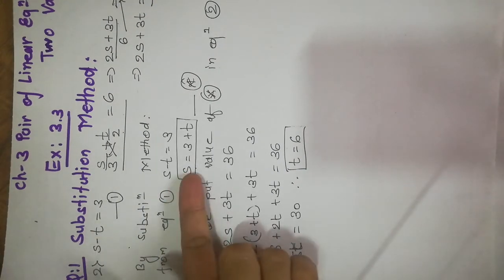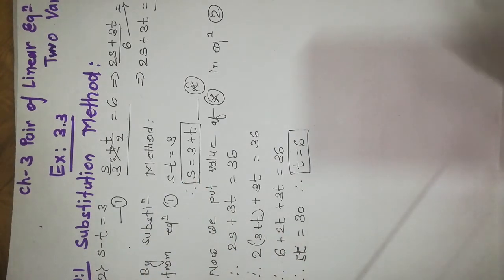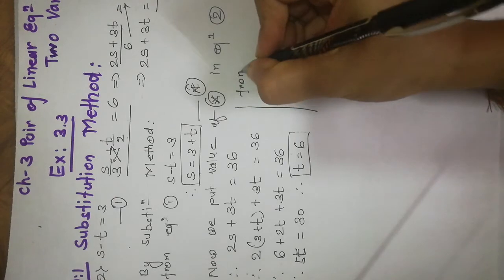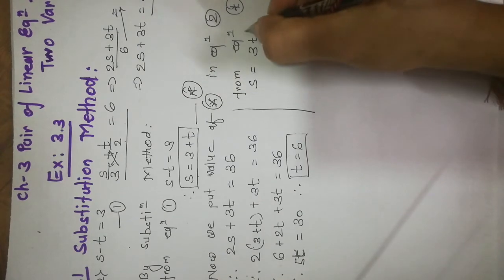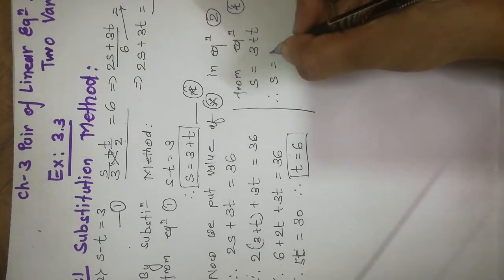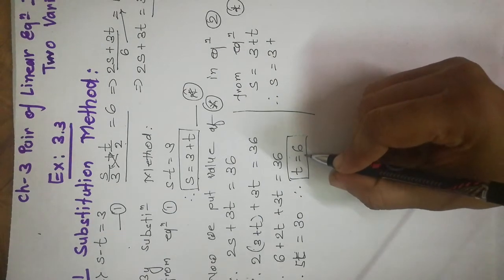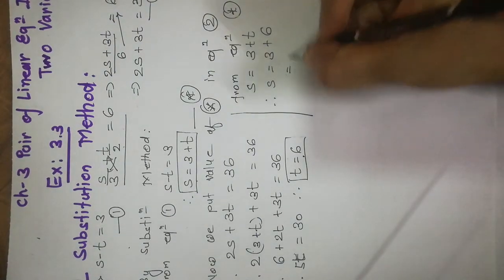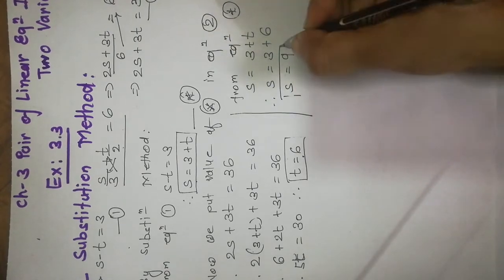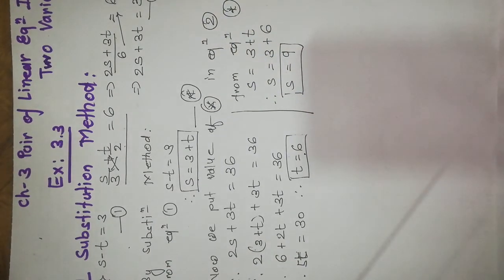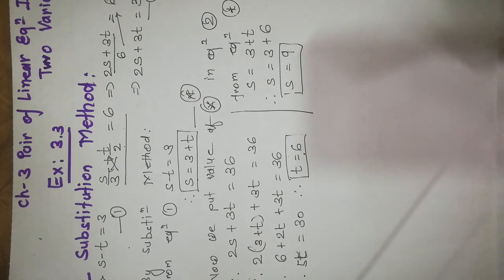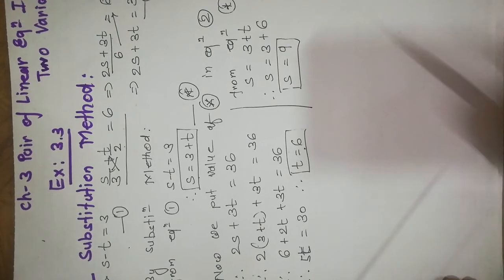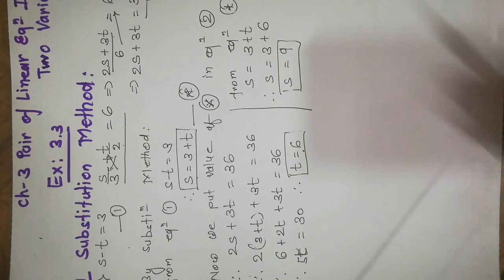Just put this value into equation star to get the value of the other variable. From equation star, s equals 3 plus t. Therefore s equals 3 plus 6, which equals 9. So we have the values of both variables: s equals 9 and t equals 6. The variables may be x, y, u, v, z — they can be any letter from a to z. We basically have to find the values of those variables.